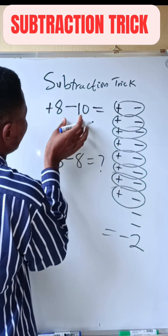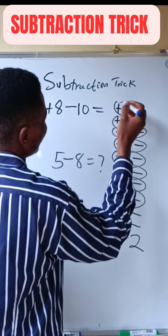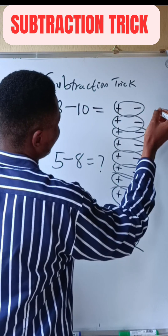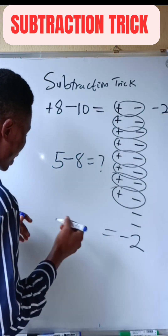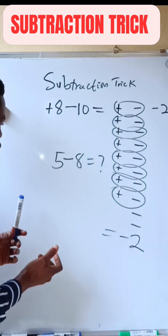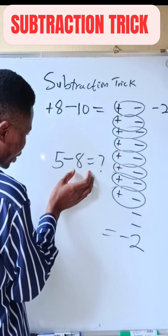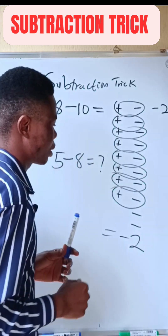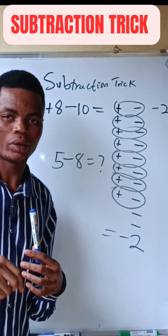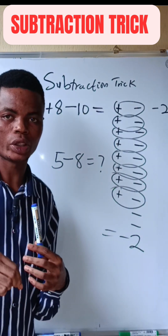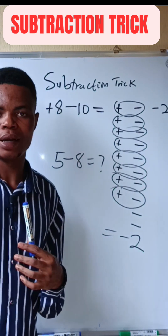It means that when you subtract 10 from 8, the answer is going to give you minus 2. If you understood, we have solved this one. Now try: 5 minus 8. What is the answer? Put your answer in the comment section. Please don't forget to share and subscribe to my channel. Bye!